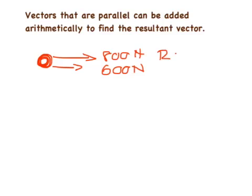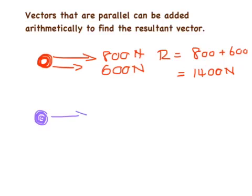So the resultant would be equal to 800 plus 600, which if my math is correct is 400 newtons. Let's take another example where perhaps we have a car that's driving along and it has a force pushing it forward with 800 newtons, but it has some air resistance acting against it, maybe 200 newtons.